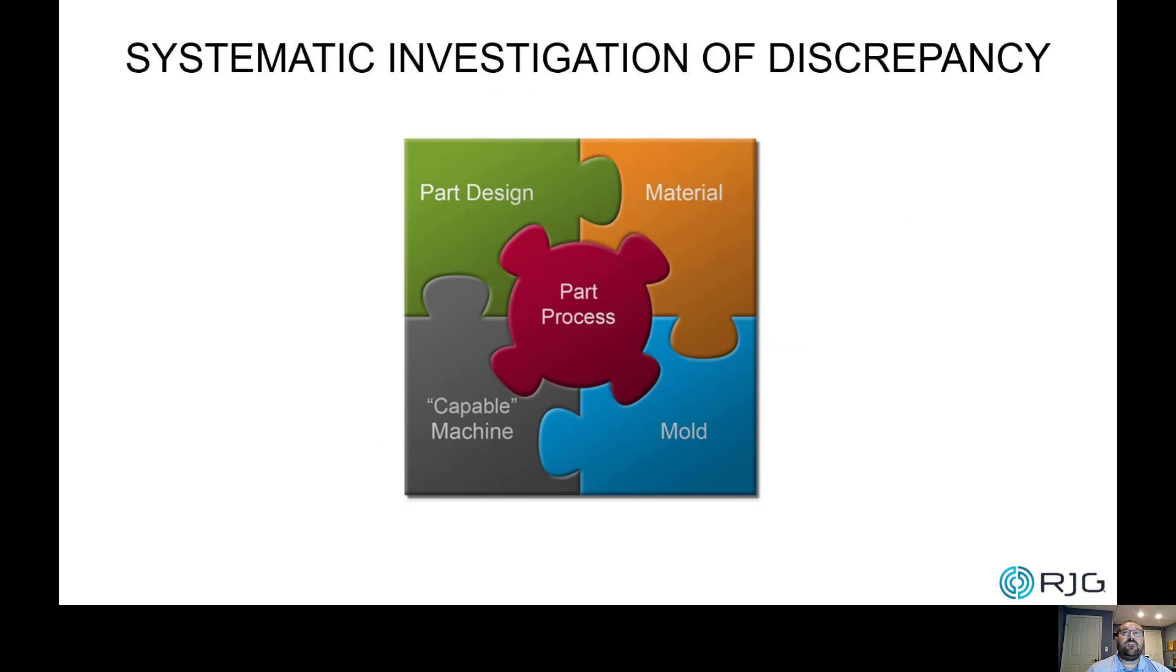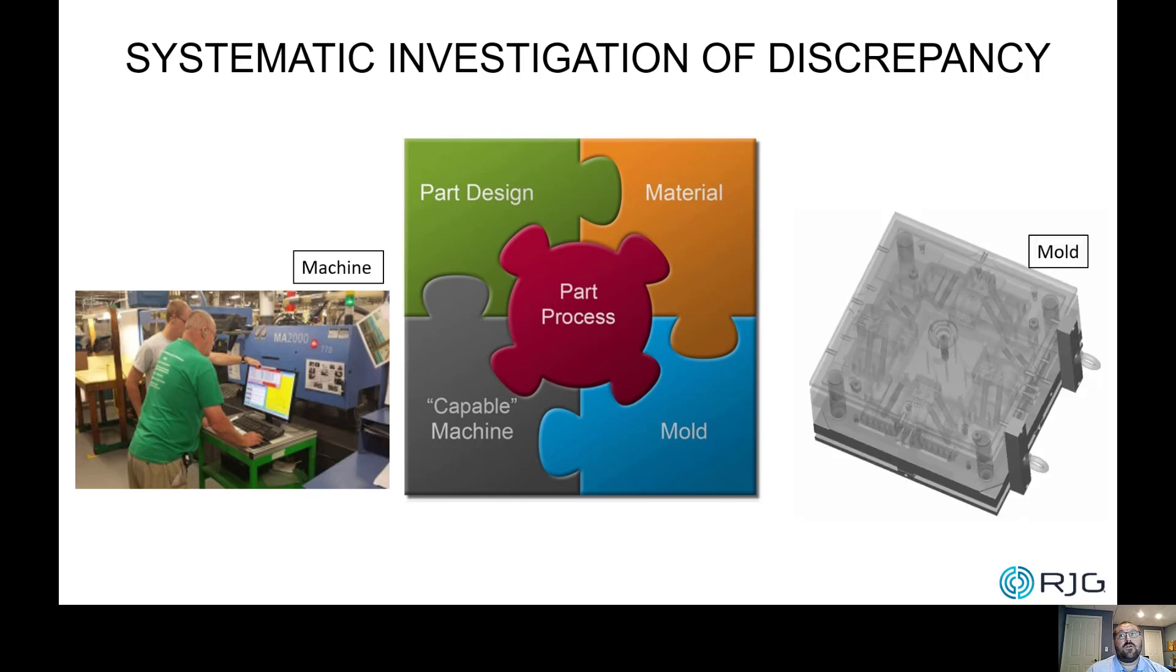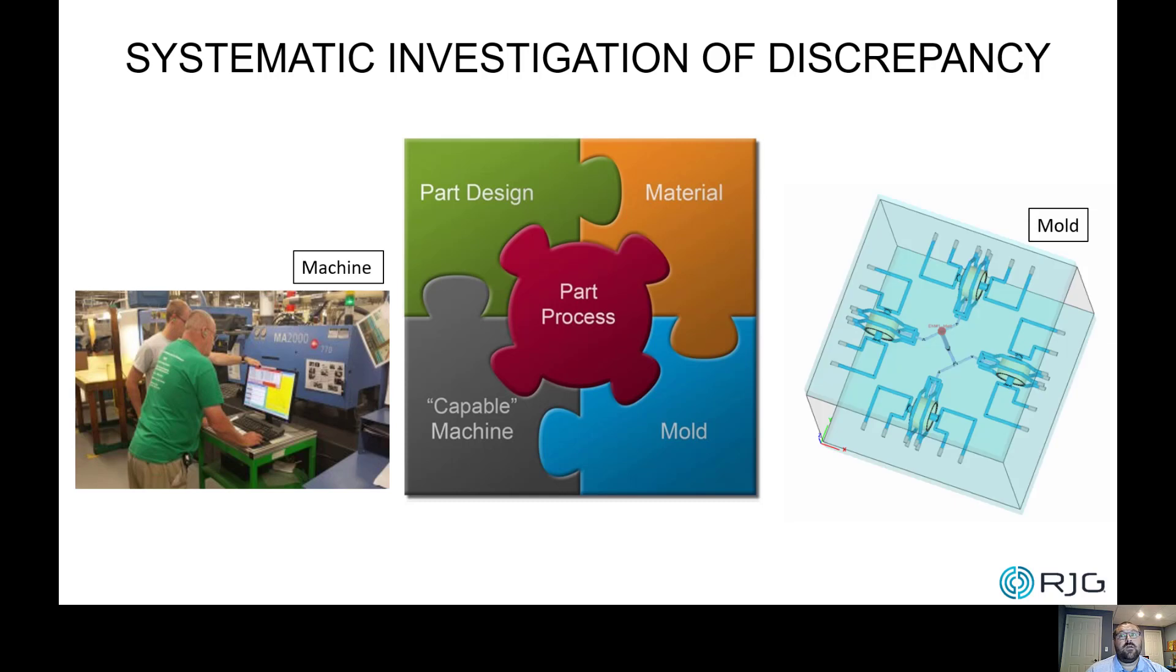In this systematic troubleshooting puzzle, there are five puzzle pieces: part design, process, machine, mold, and material. So we just matched the exact process and still see the discrepancy. Let's start with the machine. The customer is a seasoned and certified RJG trainer, and we were told that the relevant machine testing had been performed. We also reviewed the mold design and confirmed the mesh model is nearly identical. As part design stays the same, the last possibility is material.